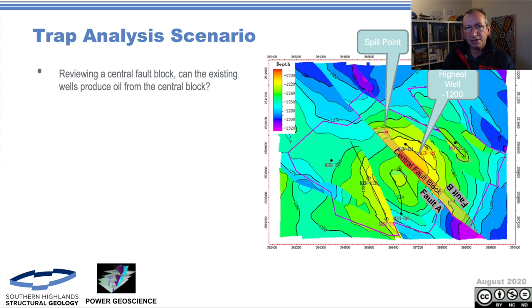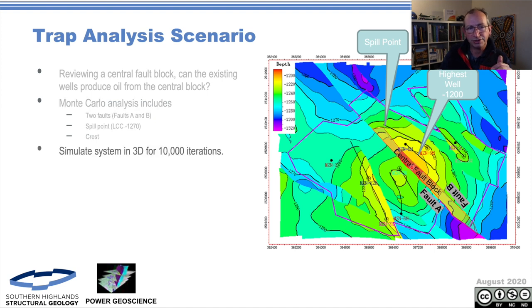So in the map, we've got a crest, a spill point. It's really worth cataloging these things whenever you produce a presentation so people can understand what the most important features are. This is where our highest well feature is at approximately 1200 meters. That's our fault block. We've got the two faults, fault A and B. We've got a spill point or lowest closing contour at 1270 and a crest. Then what we've done is we've simulated this model in 3D using 10,000 different iterations.